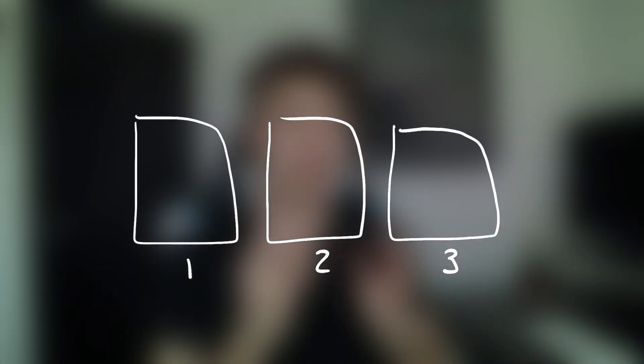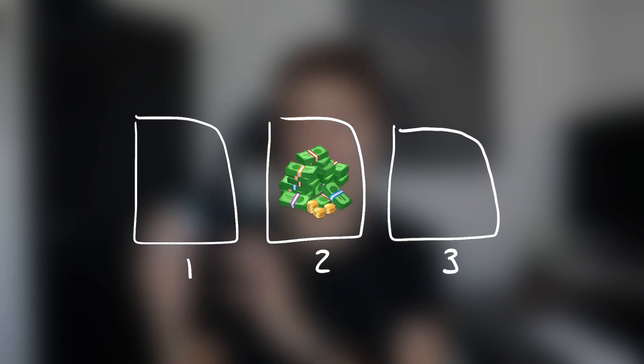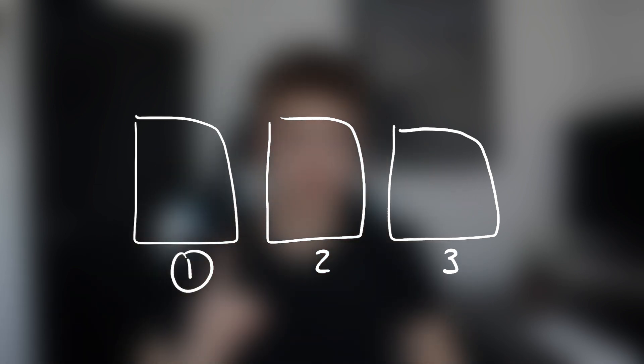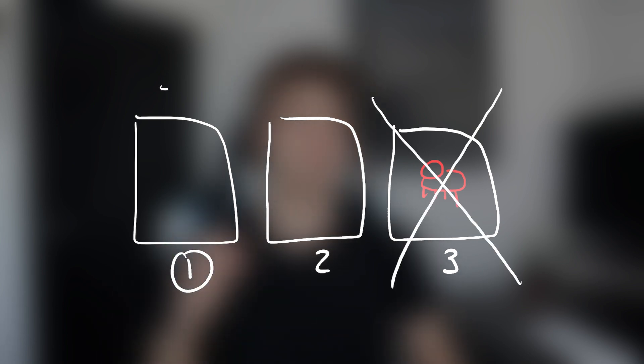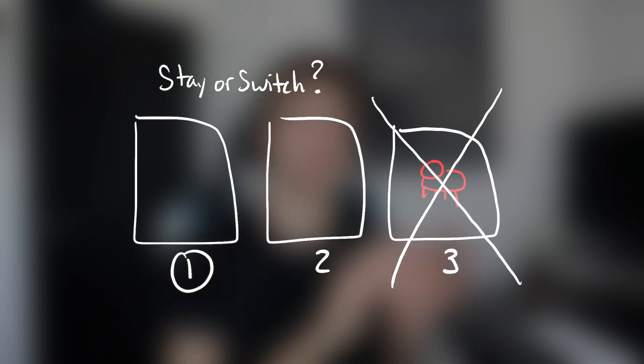You're on a game show and given the choice of three doors. Behind one of these doors is a million dollars and behind the other two are goats. Let's say you pick door number one. The host then opens one of the doors with a goat behind it and asks you if you want to stick to your original door or switch to the other one. What do you think you should do?